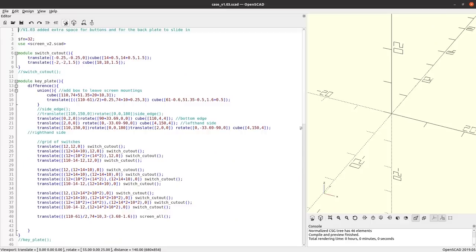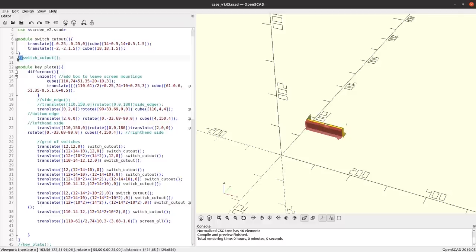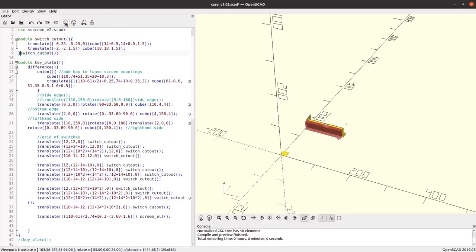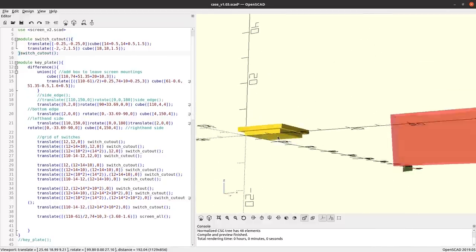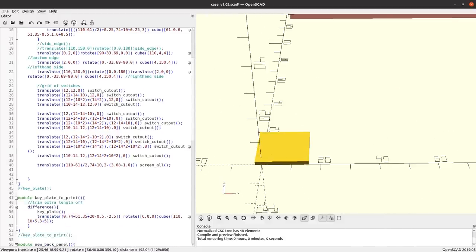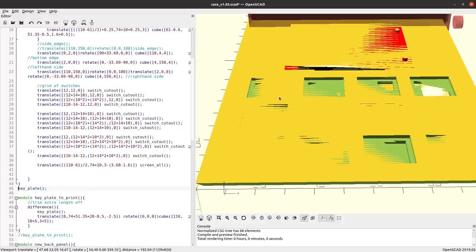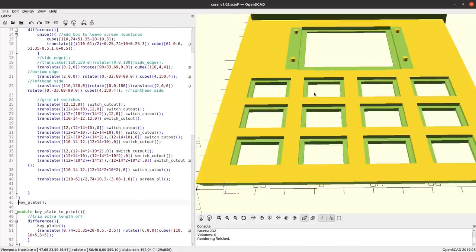I've gone into OpenSCAD and I've designed the framework for it. So the first thing I've done was I've made a copy of the cutout for what the switch needs. Then I use this to make the keyplate. So this is the first part I want so this will hold the switches in place.